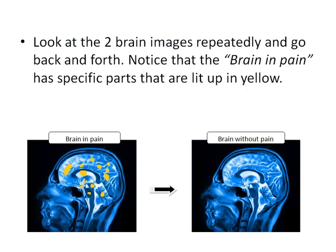Look at the two brain images repeatedly and go back and forth. Notice that the brain in pain has specific parts that are lit up in yellow. Go ahead, look back and forth.